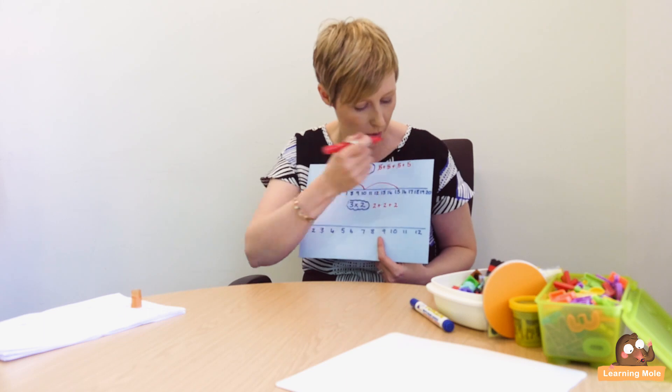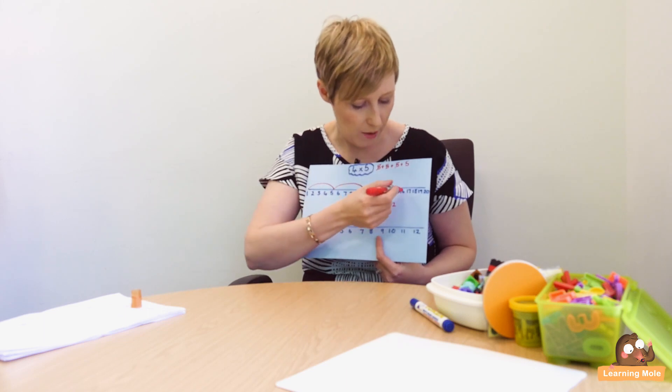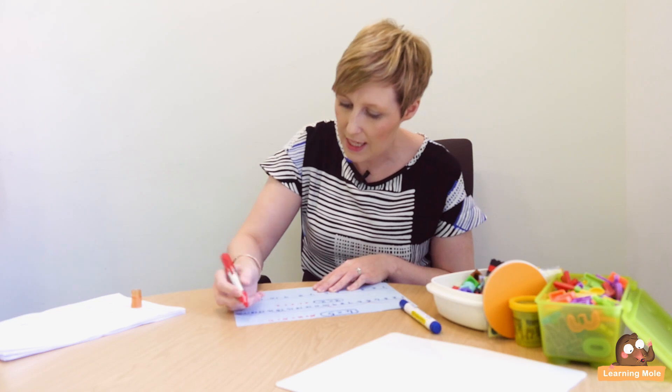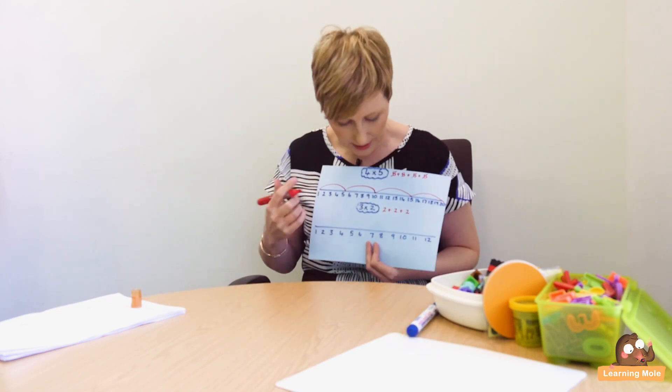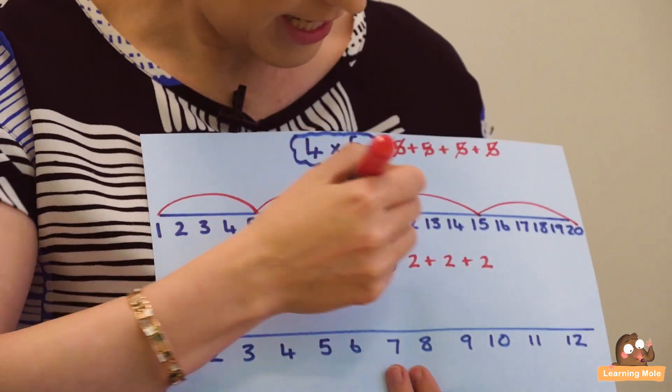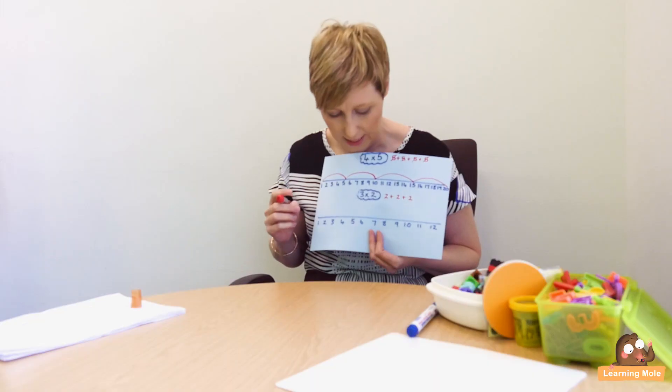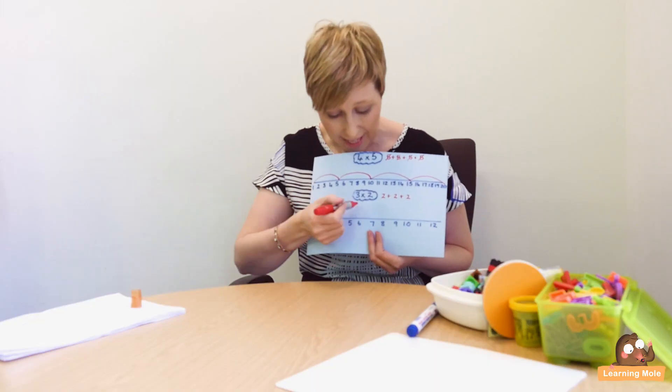Then one more jump of five — one, two, three, four, five — gets you to twenty. So the answer is four times five equals twenty, and they can actually count all of that on their number line and see it visually.